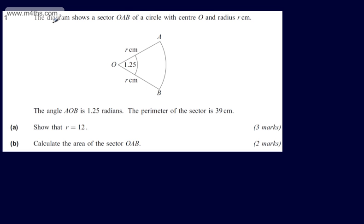This is question number 1. The diagram shows a sector OAB of a circle with centre O and radius R centimetres. The angle AOB is 1.25 radians and the perimeter of the sector is 39 centimetres. In part A, for 3 marks, we're asked to show that R is equal to 12.